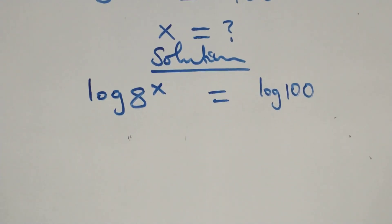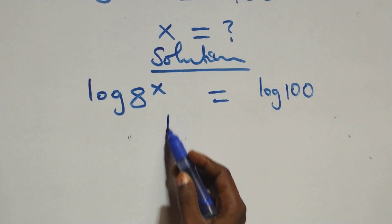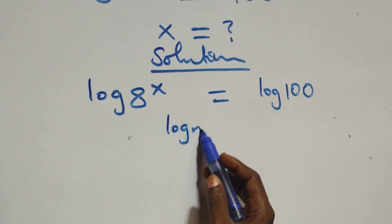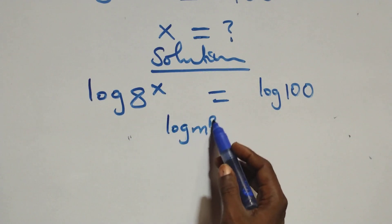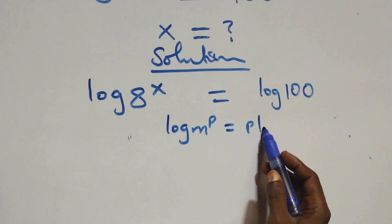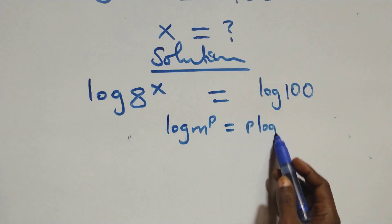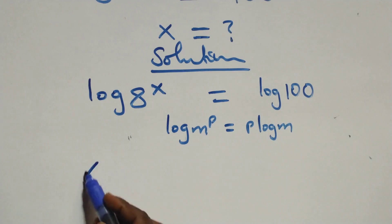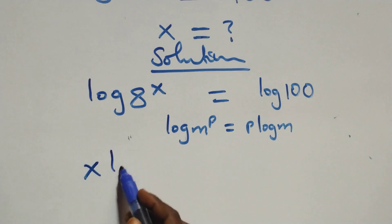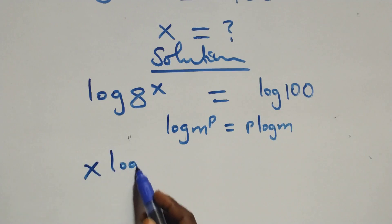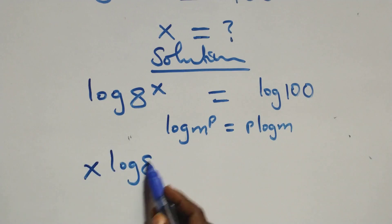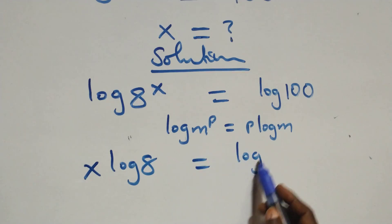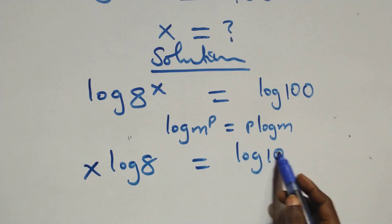The next step, we apply the power rule of logarithm. We have log m raised to power p, which is the same as p·log m. So here we have x·log 8 equals to log 100 on this side.